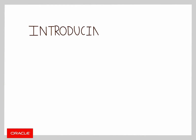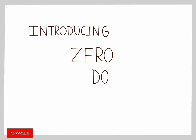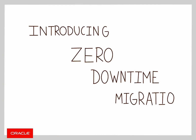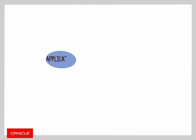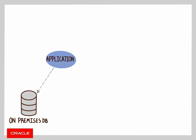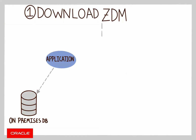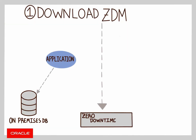Zio Downtown Migration, ZDM, is the premier automated tool for moving your databases to the Oracle Cloud. Let's start with your application, which is connected to your Oracle database on-premises. The first step is to download ZDM to an on-premise server, configure it, and gather all the required information for your database cloud migration.